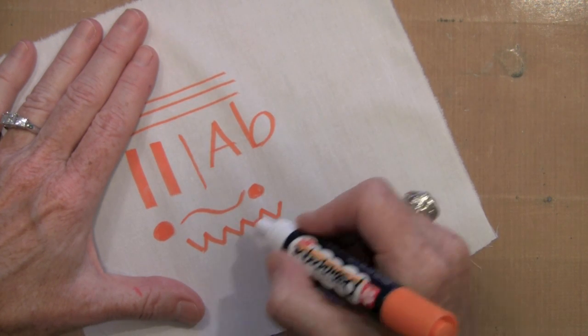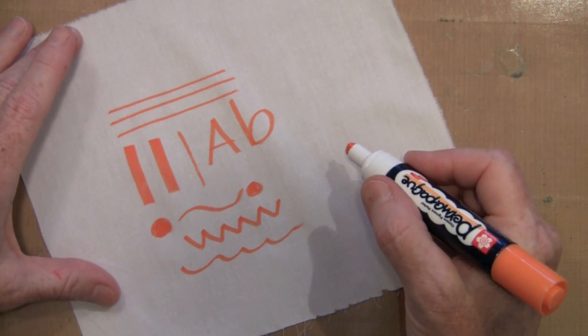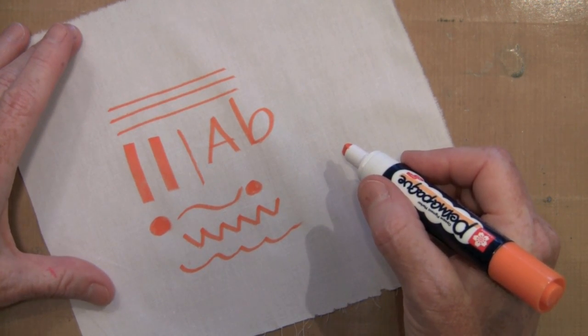When you combine them with the Gelly Roll markers, you have a really winning combination. Permapake and Gelly Roll, both made by Sakura, both fantastic products.